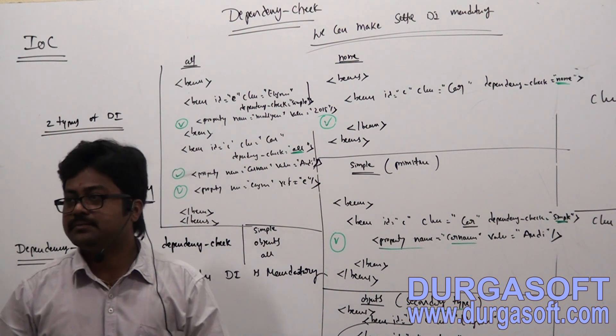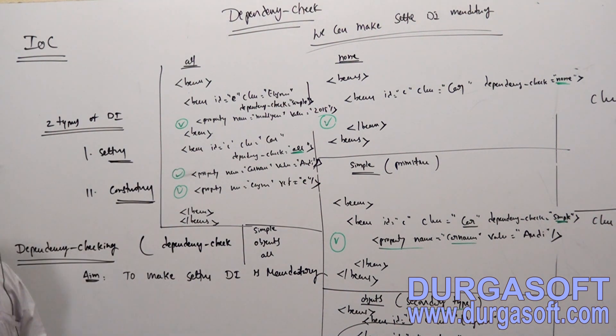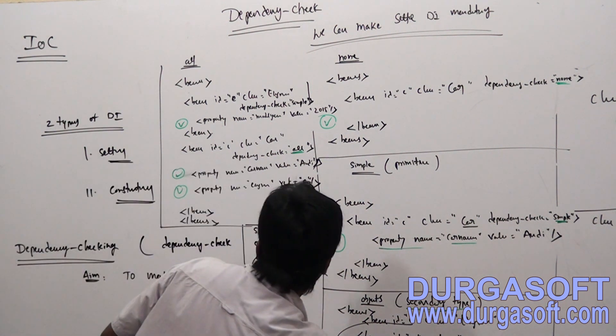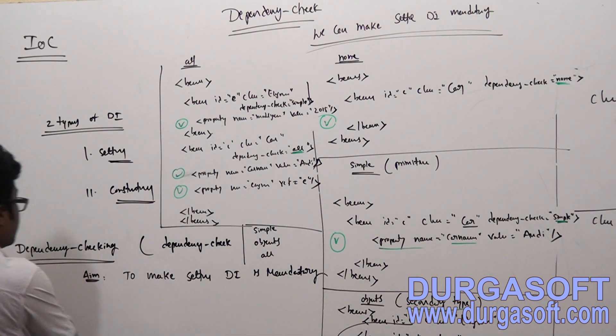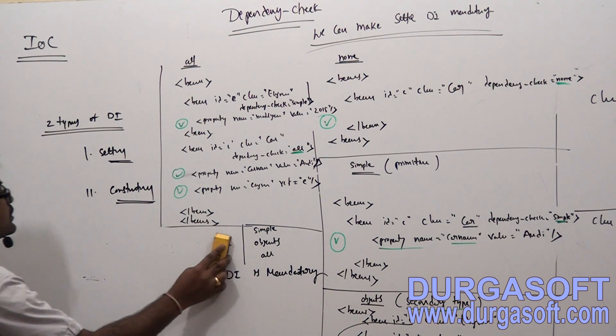The main disadvantage with the dependency-check attribute is: if a class contains five primitives and you only require one or two, applying dependency-check forces you to pass all five input parameters — whether you need them or not.